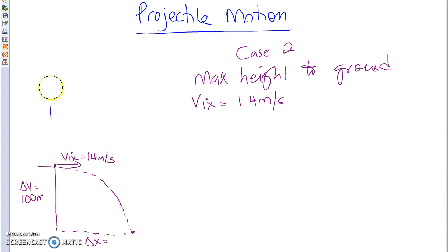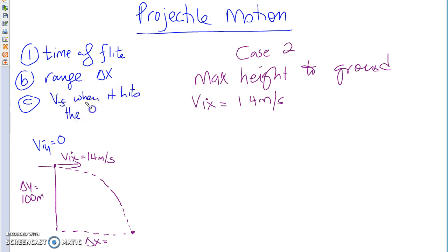Now what is the y component of velocity at the top of this motion because it's maximum height? Zero. So the y component, of course, at the top of this motion is zero. There is no y component. And again, I'm going to ask you the same three kinds of questions. Firstly, time of flight. B, range, horizontally, delta x. And C, slightly different, which is with what velocity will it hit the ground? So Vf when it hits the ground.